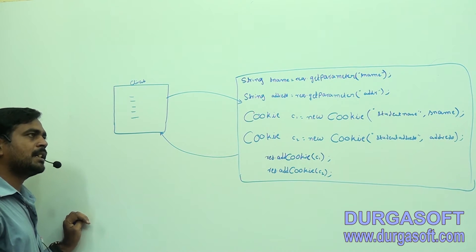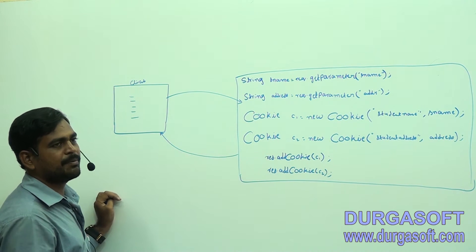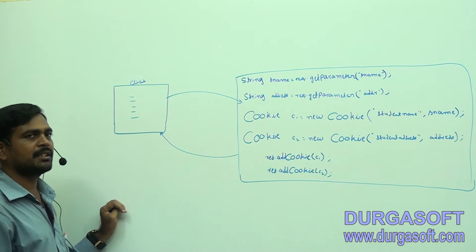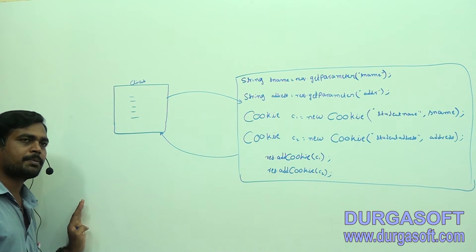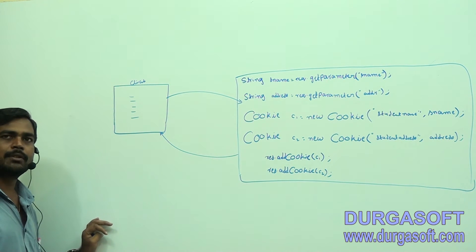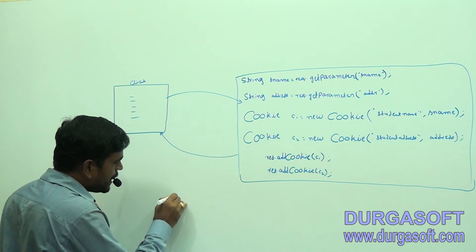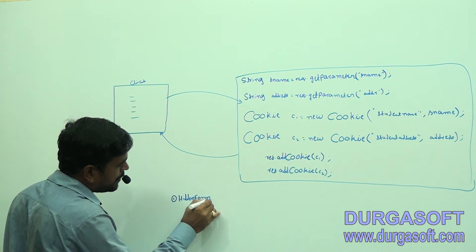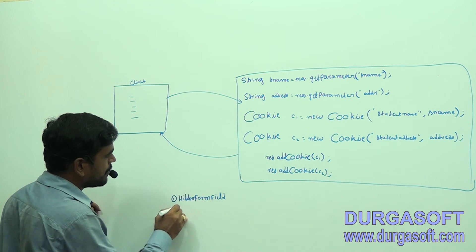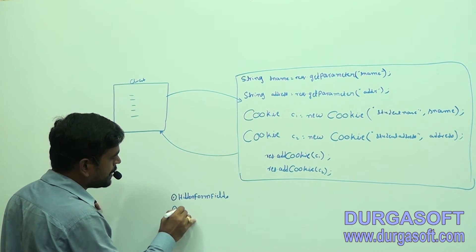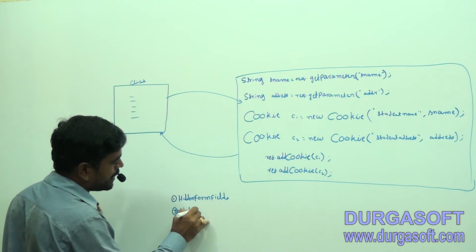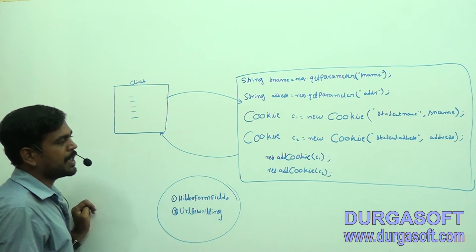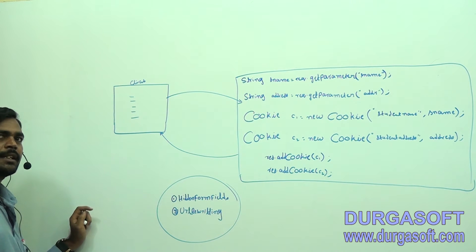In this case, there is one small drawback. Unnecessarily, network traffic is going to be increasing. If more number of cookie objects are created, network traffic is going to be increasing and it is not giving the proper response in time. In order to overcome this problem, we can store the data temporarily at the client side for some period of time.